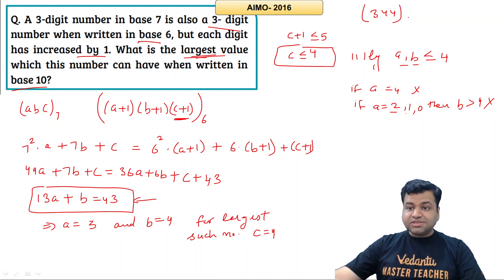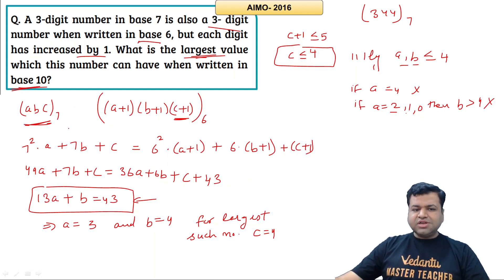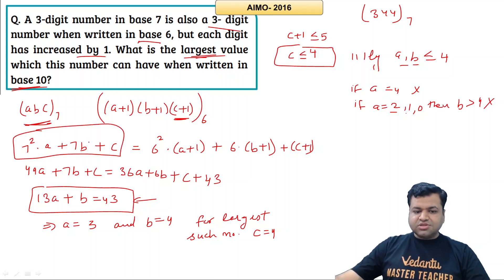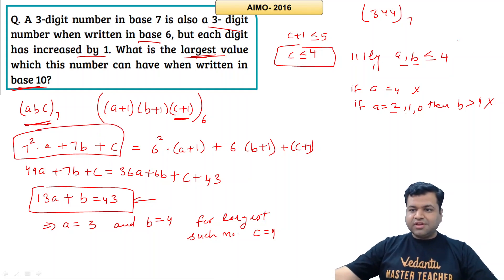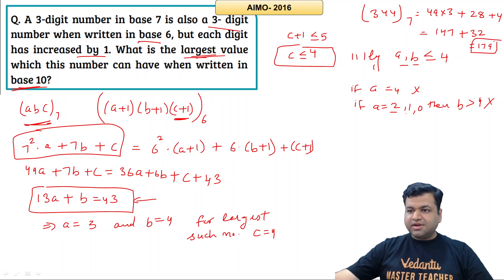The number is 344 in base 7, where A=3, B=4, C=4. Converting to base 10: 49×3 + 7×4 + 4 = 147 + 28 + 4 = 179. So the answer is 179.